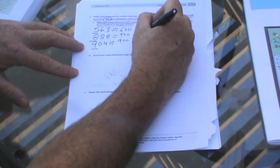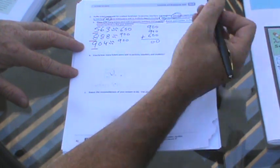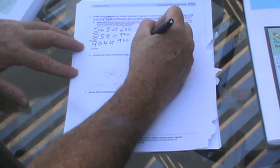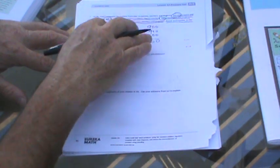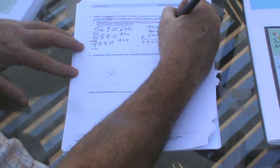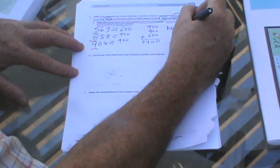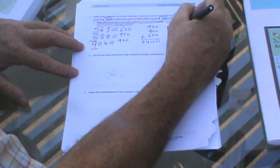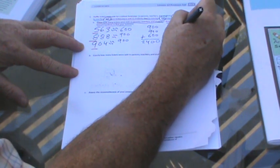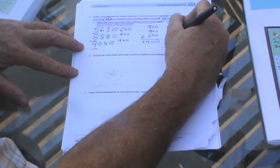So we're rounding to the nearest hundred. Halfway between 0 and 100 is 50. 563 rounds up to 600, 888 rounds up to 900, and 904 stays at 900. Now we add: zero plus zero is zero, and 9 plus 9 is 18, plus 6 is 24. About 2,400 tickets were sold.